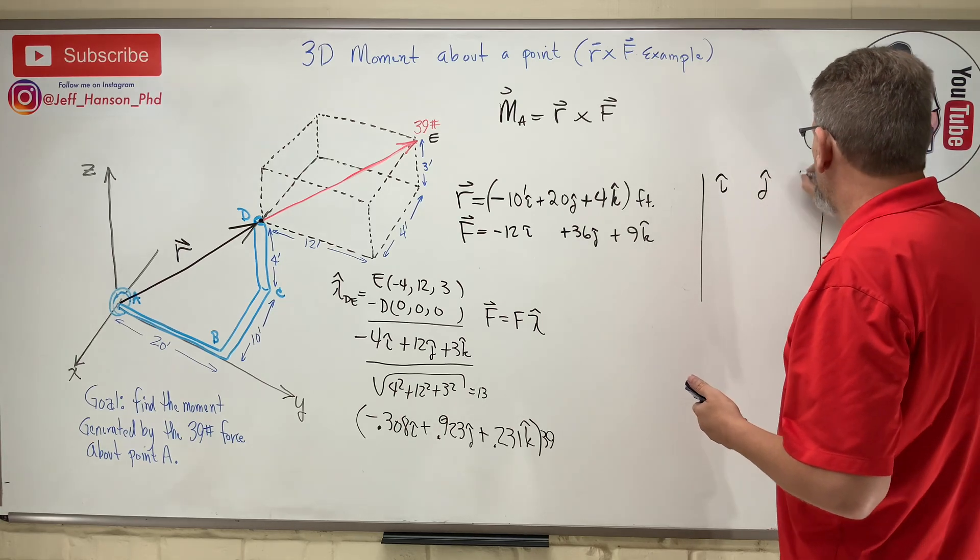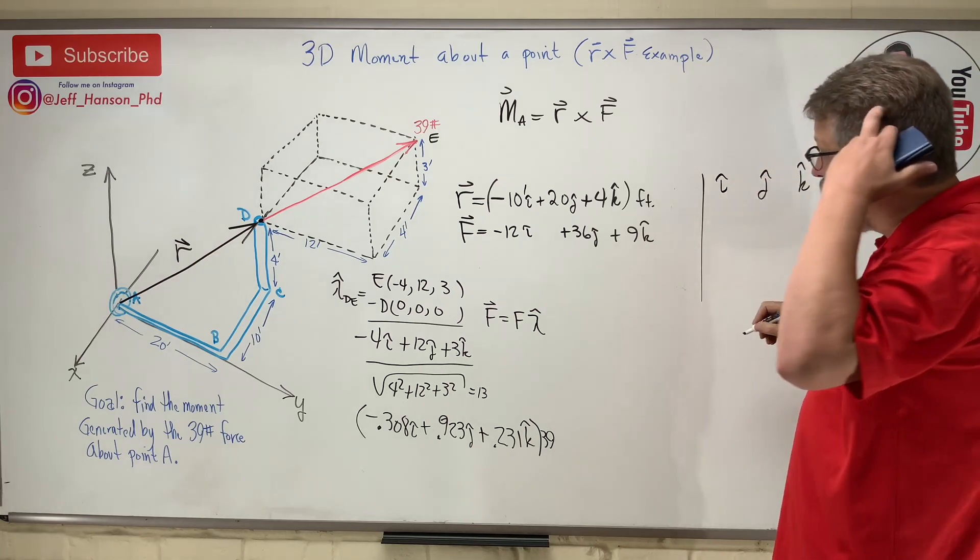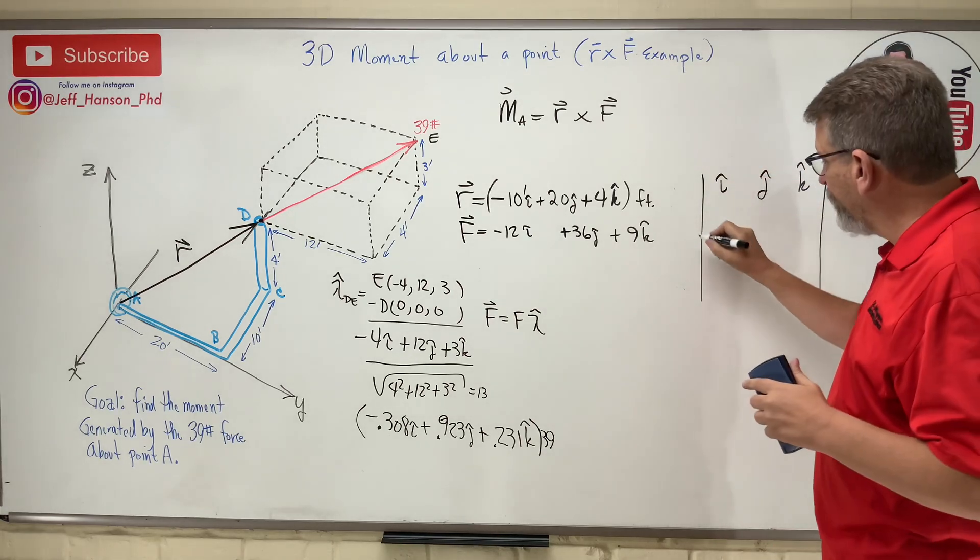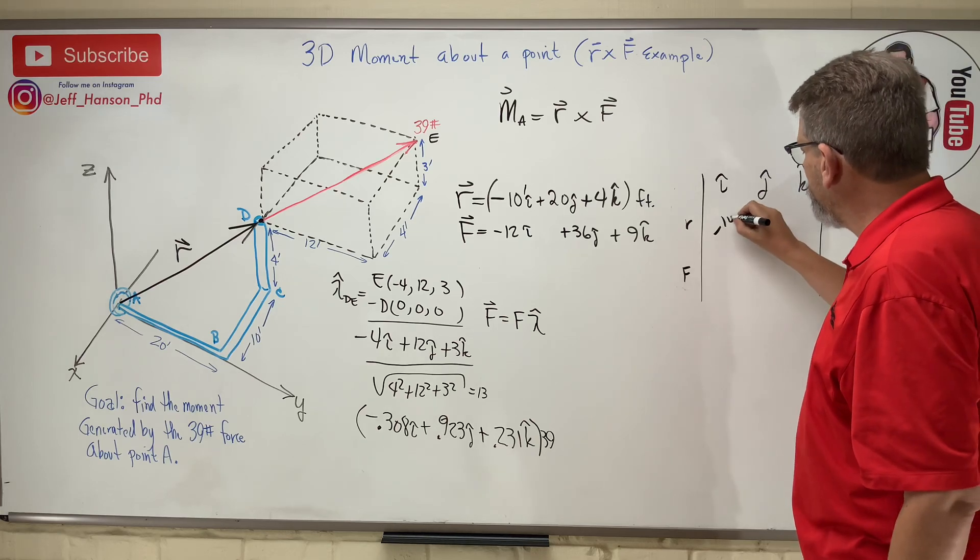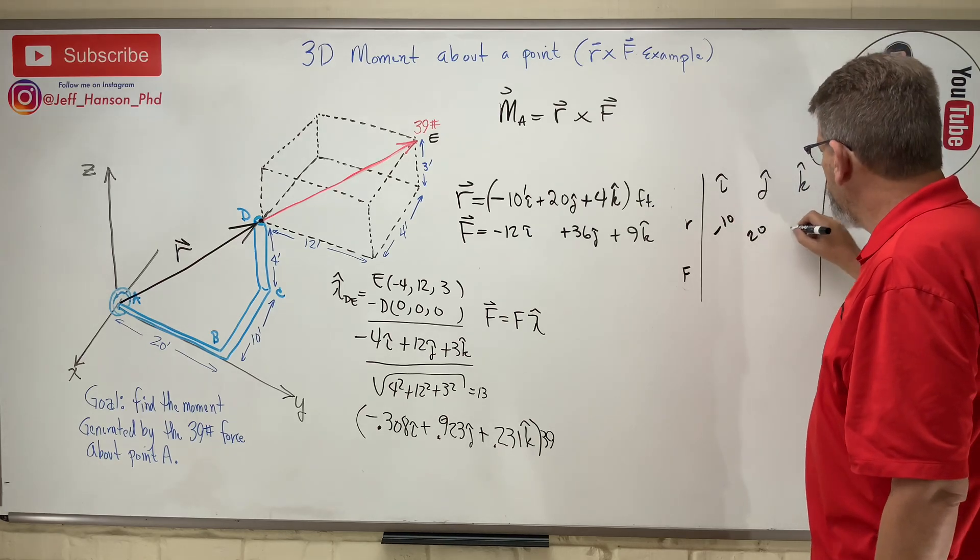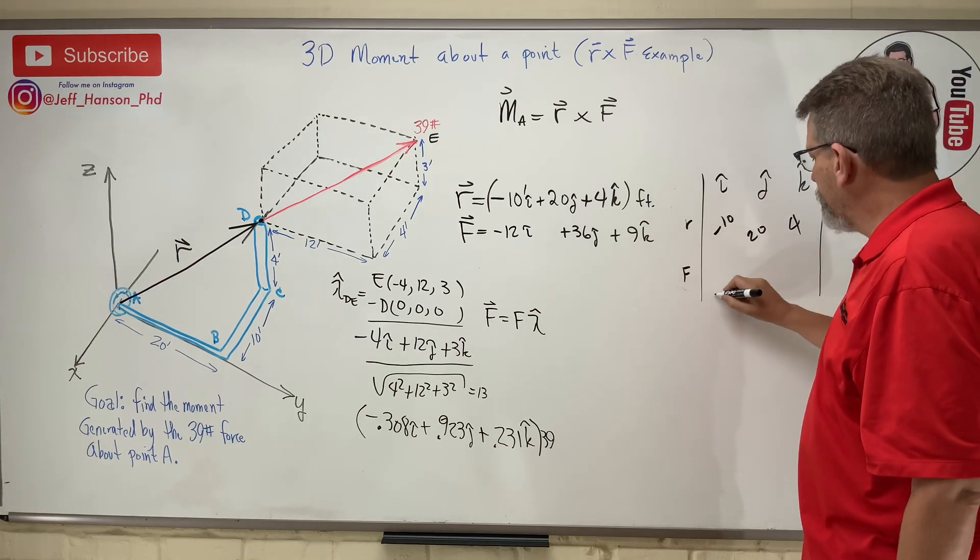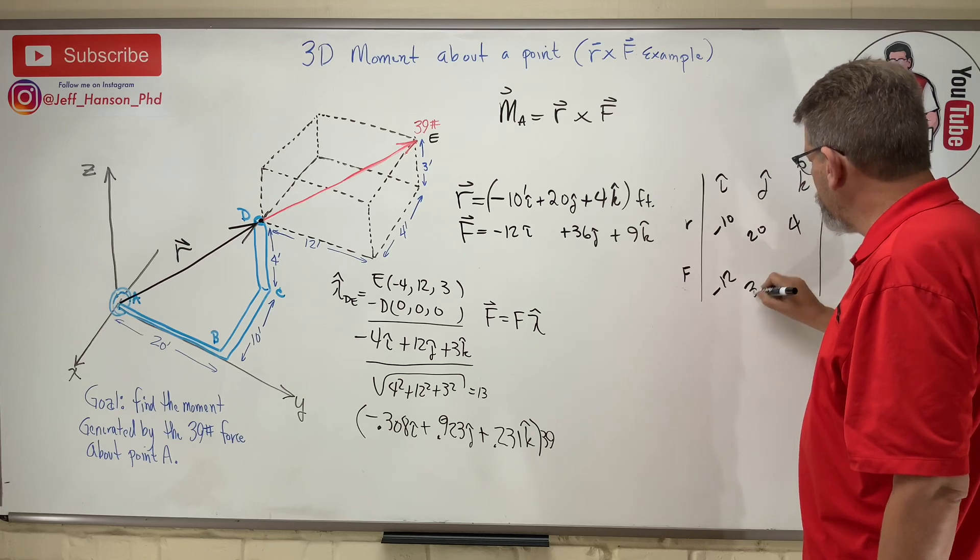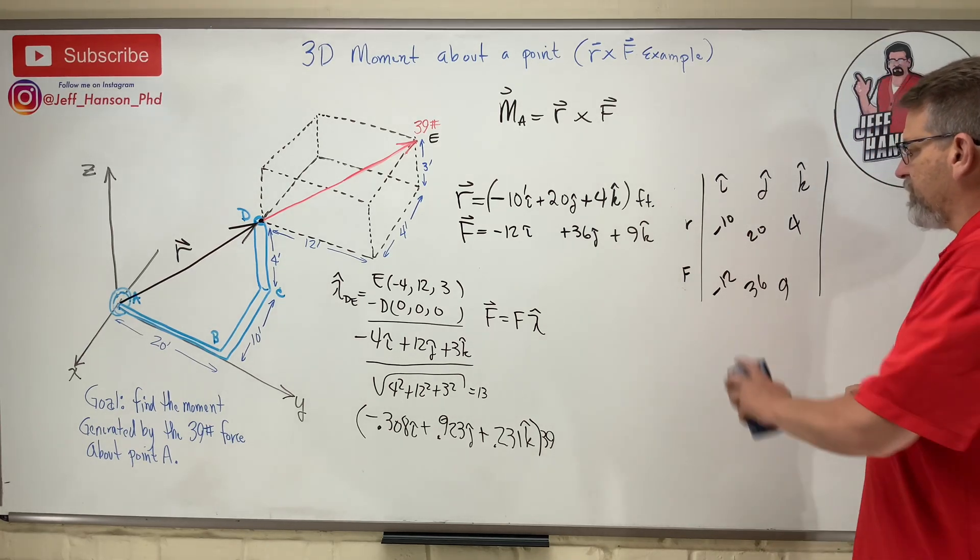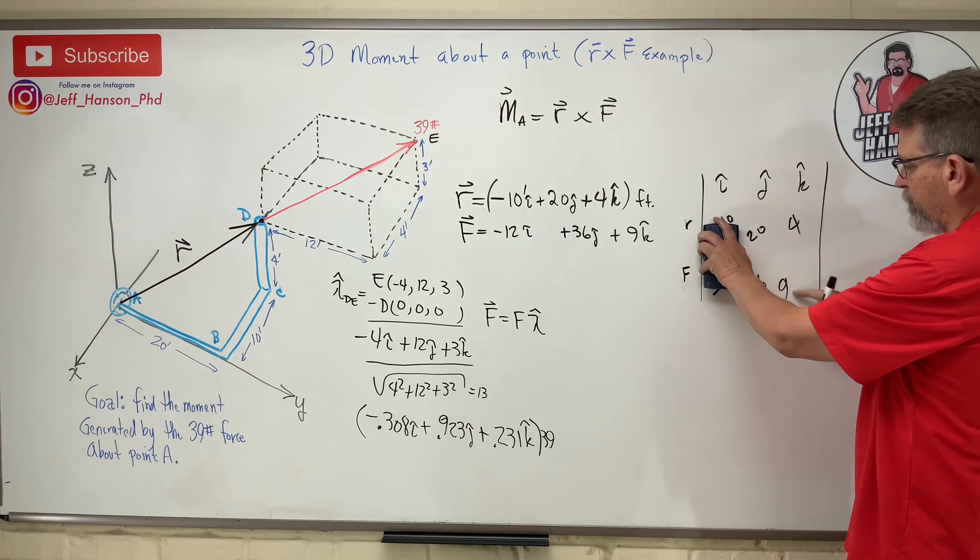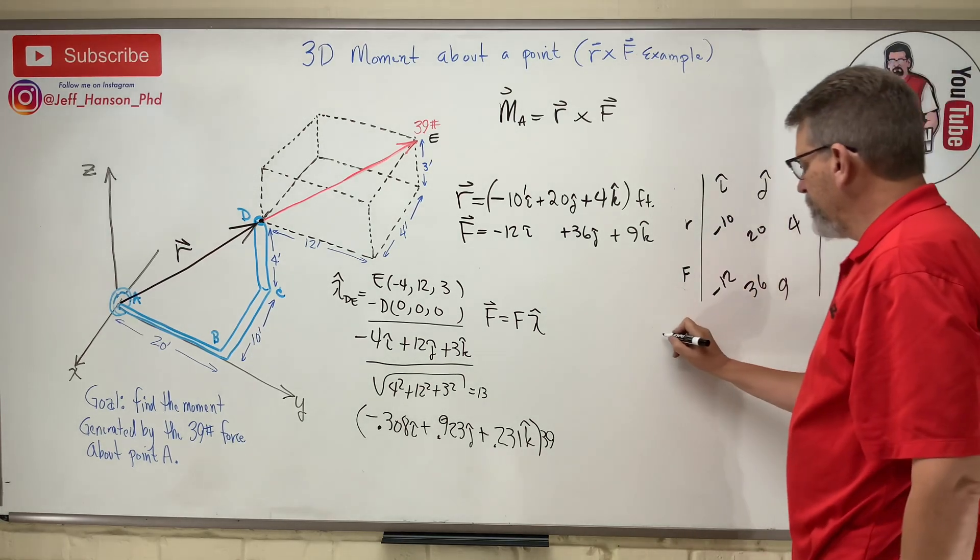i j k. It's r cross f, not f cross r. So this is the r, this is the f. Negative 10, 20, 4. Negative 12, 36, 9.